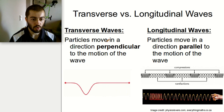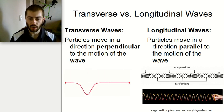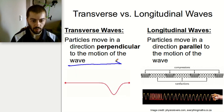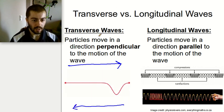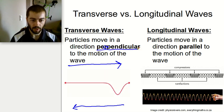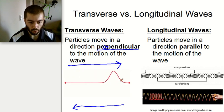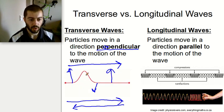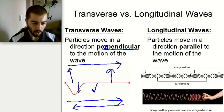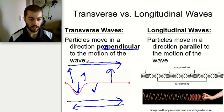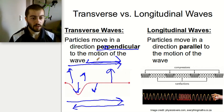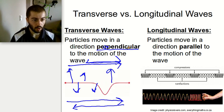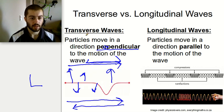With transverse waves, the particles move perpendicular to the motion of the wave. If we look at this wave here and describe the direction of motion, the wave is moving side to side. The particles are jumping up and down — this is perpendicular to the direction of the wave. So if the particles are moving in a direction that's perpendicular, or at a 90-degree angle, to the direction of the wave, that means it's a transverse wave.